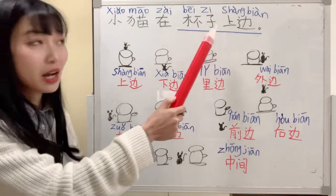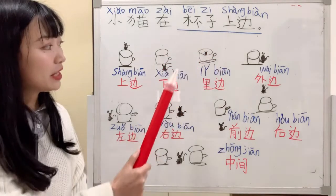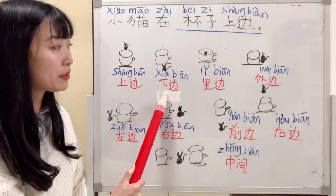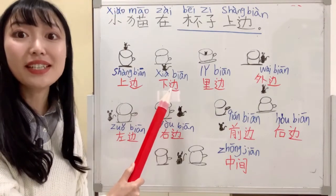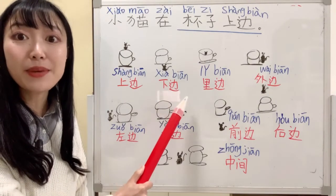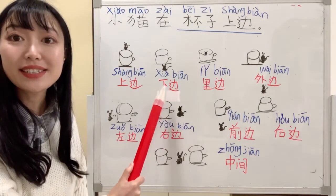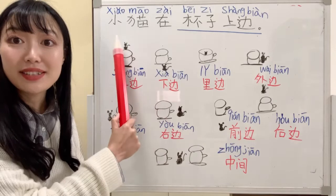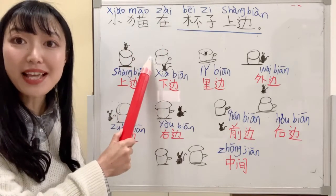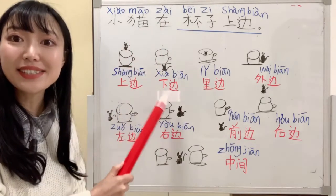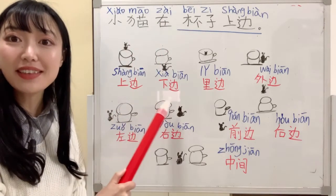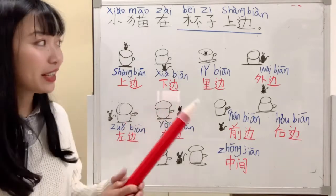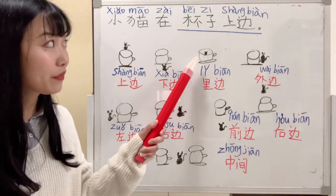小猫在杯子上边. How about the cat is under the cup? Under, we can say 下边. 小猫在杯子下边.